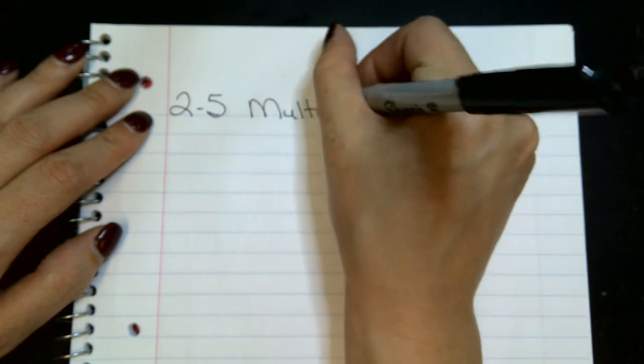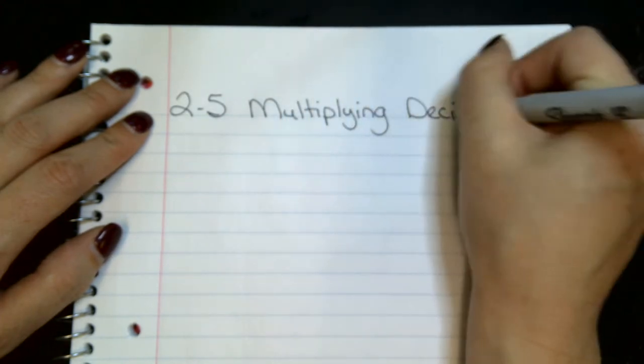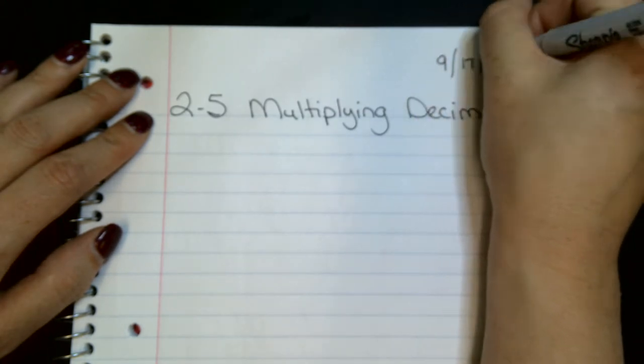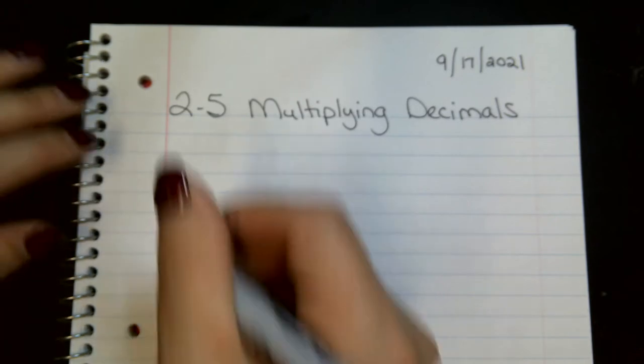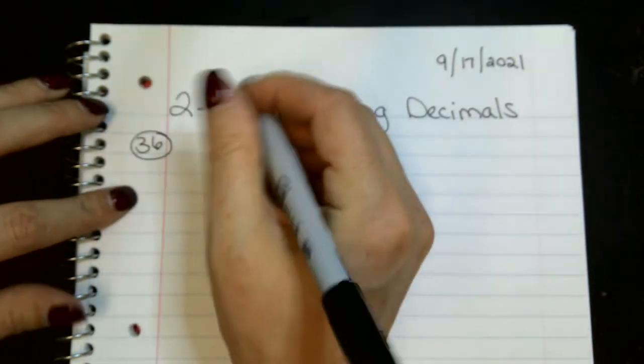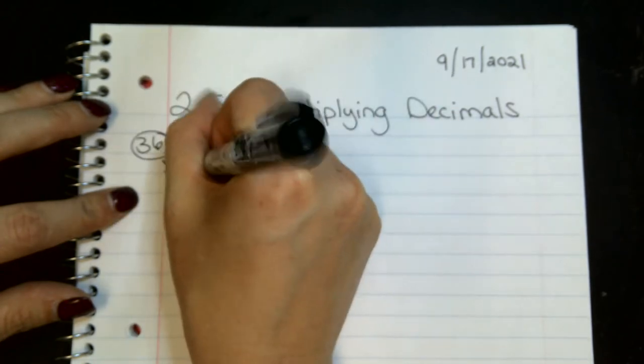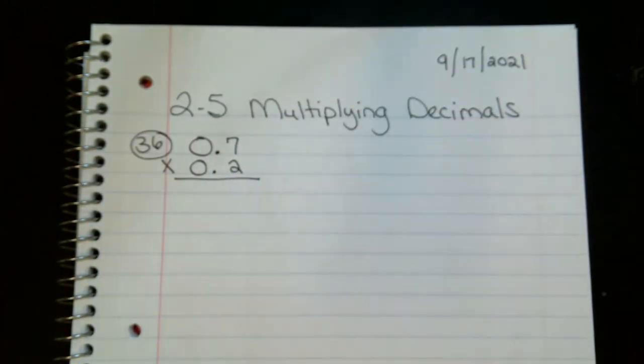So, go ahead and label your paper if you're here with me or at home. And today's date is September the 17th, 2021. And we're starting at page 79 at the very top, number 36. Go ahead and write that down. And don't mess with the decimals yet, but go ahead and attempt to complete this problem.